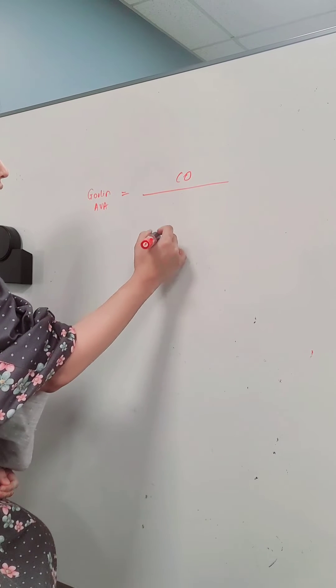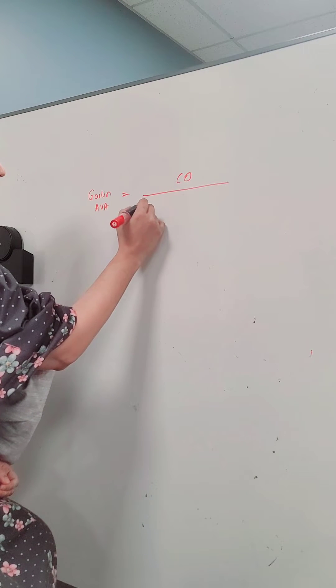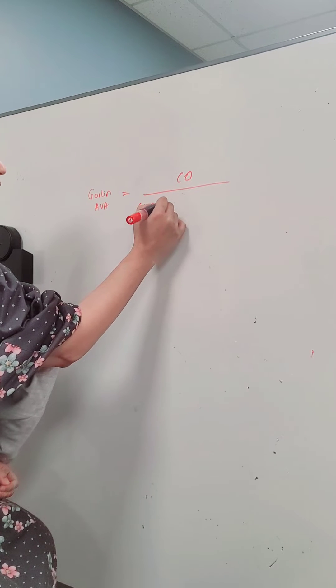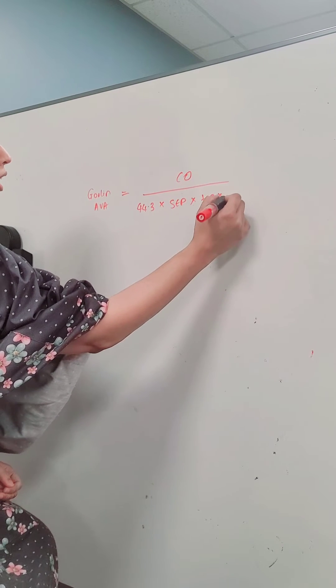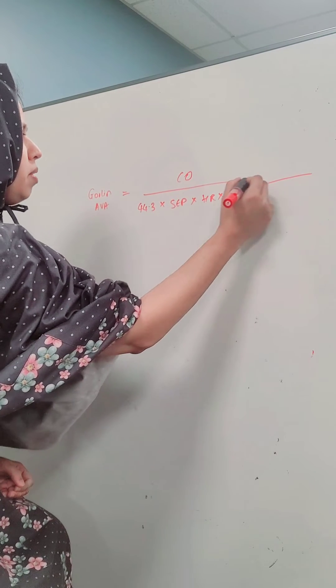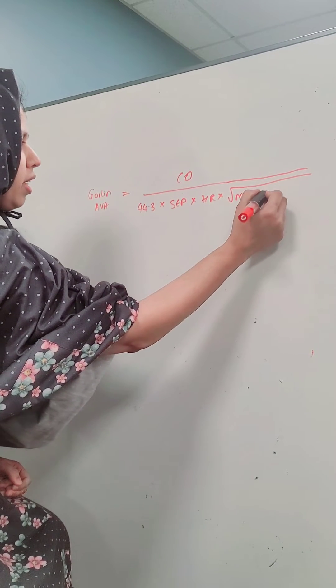So the Gorlin equation is cardiac output divided by 44.3 times the systolic ejection period times the heart rate times the square root of the mean gradient.